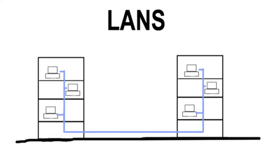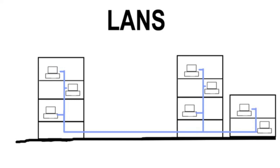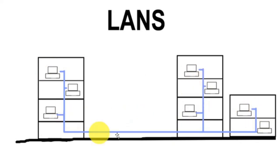You can even have other buildings with their own networks — for instance, a college campus with multiple buildings all connected together. When you connect networks together like that, it's called an inter-network. However, it's still a LAN — a local area network — because they are geographically close together.